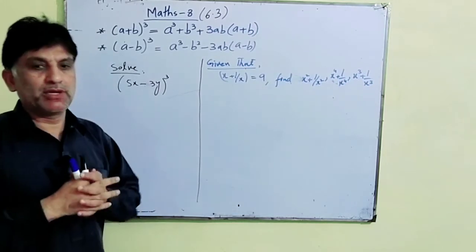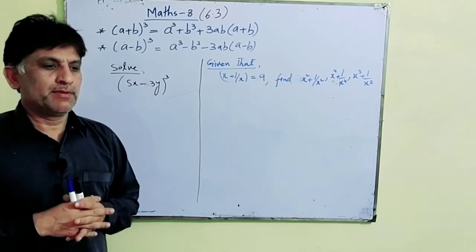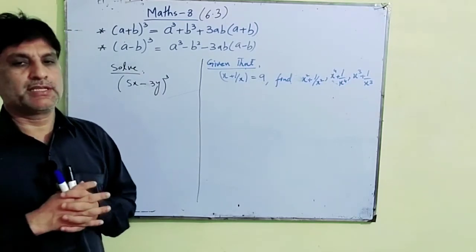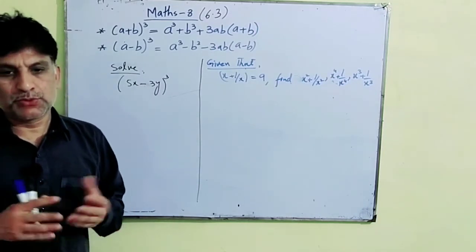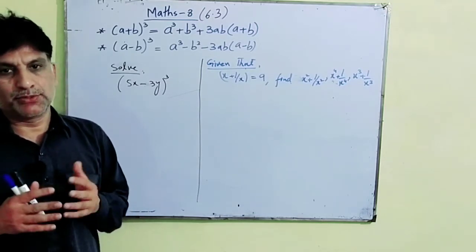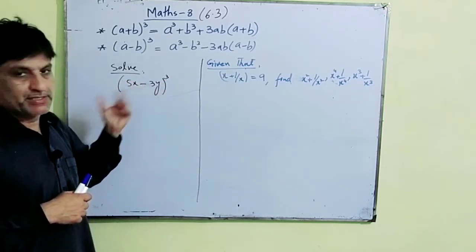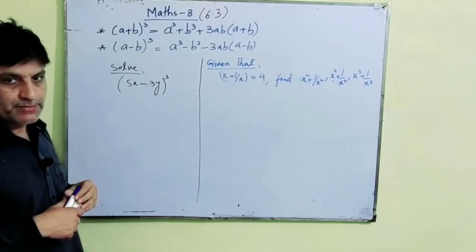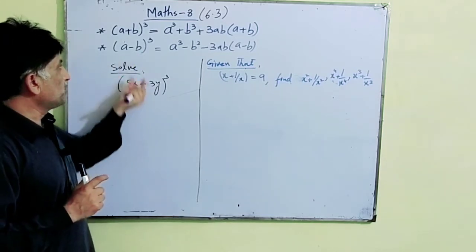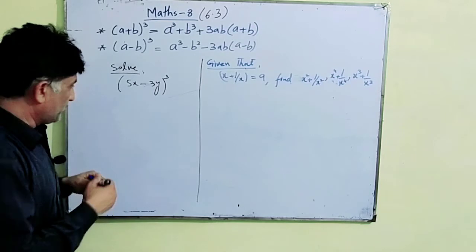Now let us solve problems based on the formulae we just proved. Remember, in mathematics we try to take problems ourselves so that students, seeing these problems and formulae, can do the exercise independently. One problem: solve (5x - 3y)³. The formula being applied here is (a - b)³.